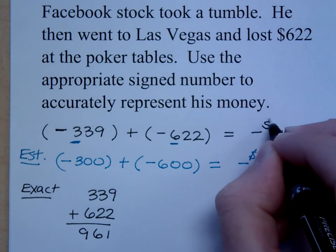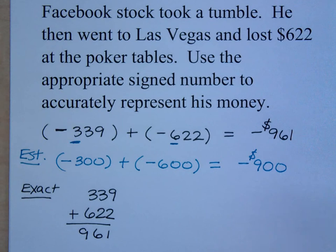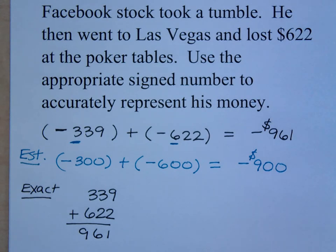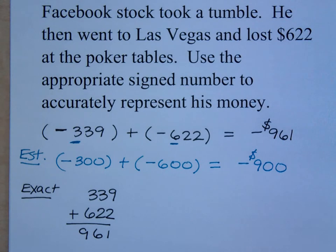Of course, this is measured in dollars. So my estimate was negative $900, and my exact answer was negative $961. The estimation doesn't give you the answer — it just lets you know if you are in the right place. Does this make sense for what happened to Dominic? Any questions about that?